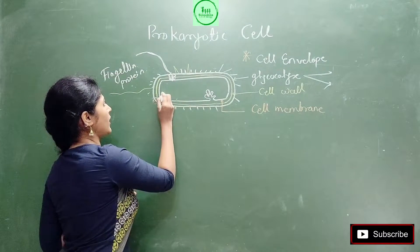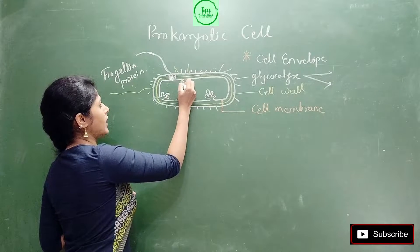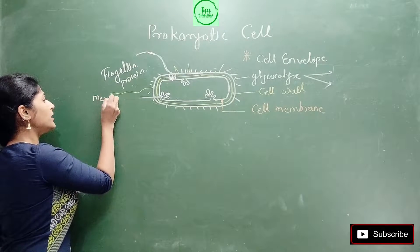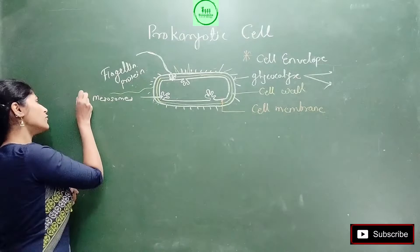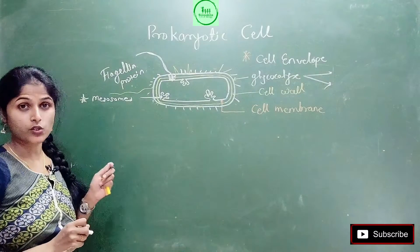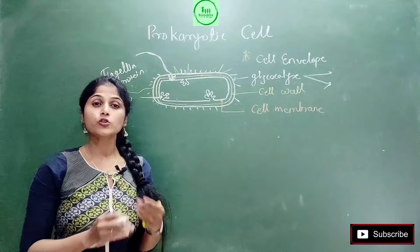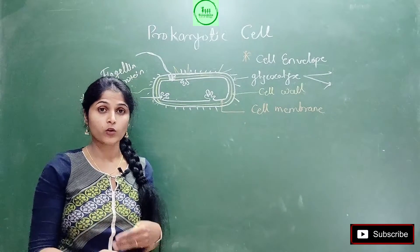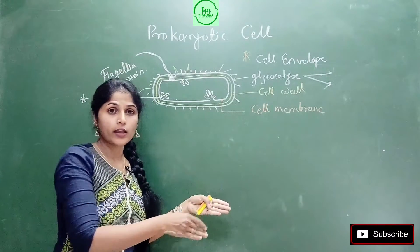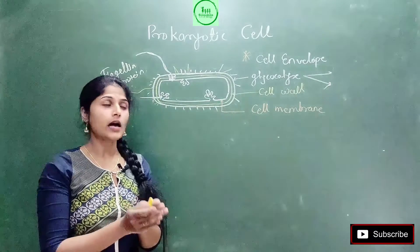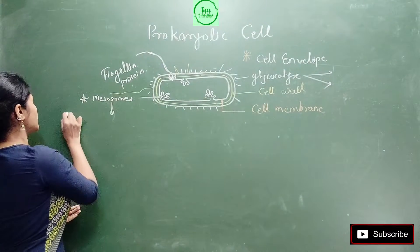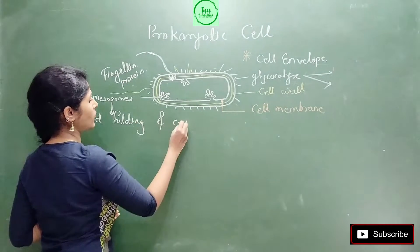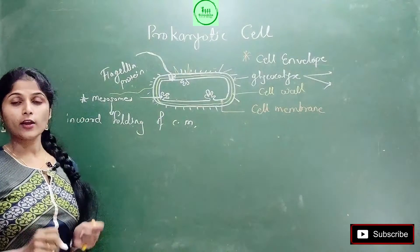Consider here there is a fold. These folds are called mesosomes - very important for exams as well as mains questions. What is mesosomes? This question comes. So mesosomes are foldings of cell membrane. But more specifically, where are they? Are they inward foldings or outward foldings? Mesosomes are the inward foldings. What is it? Inward foldings of cell membrane.